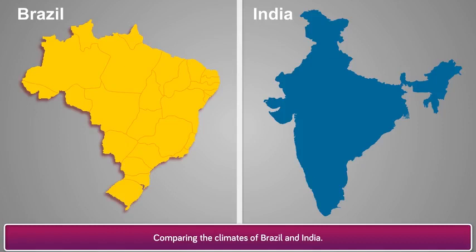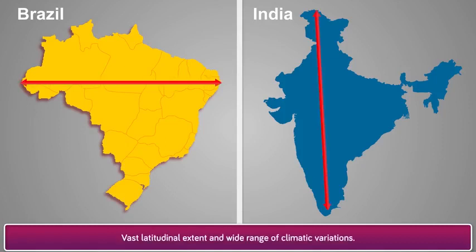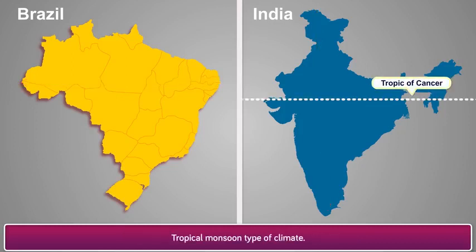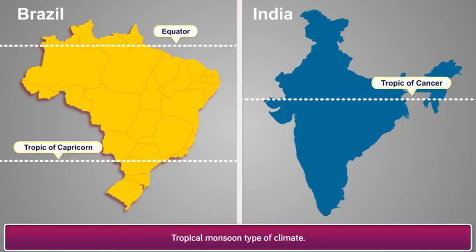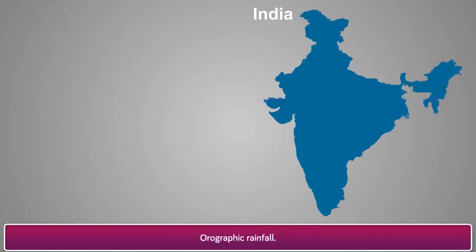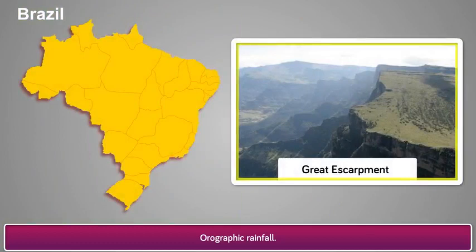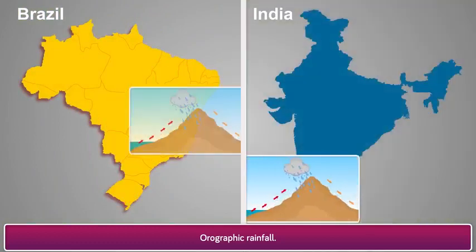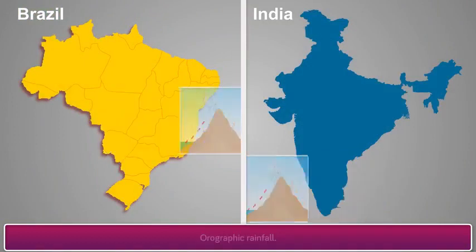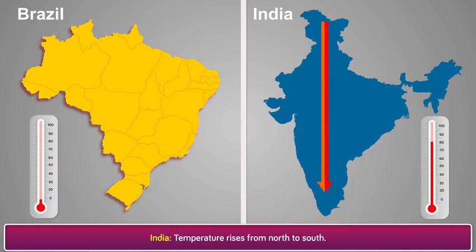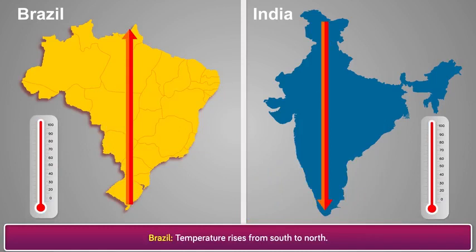Let's compare the climates of Brazil and India. Both India and Brazil have vast latitudinal extent and therefore both experience a wide range of climatic variations. The Tropic of Cancer passes through India, and the Tropic of Capricorn and Equator pass through Brazil. Therefore, both countries have tropical monsoon type of climate. Due to the natural obstruction of the Himalayas, Western Ghats and Eastern Ghats in India, and the Great Escarpment and the Brazilian Highlands in Brazil, orographic type of rainfall is prevalent in both countries. As we go from north to south in India, the temperature increases, and in Brazil, as we go from south to north, the temperature increases. Therefore, the climates of Brazil and India are similar in most ways.